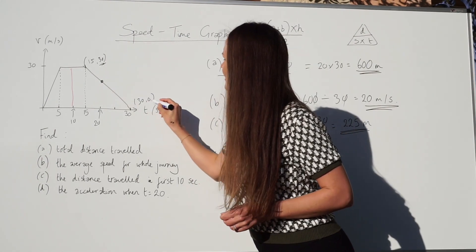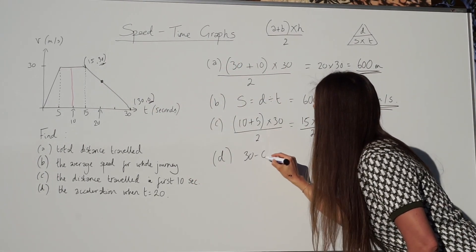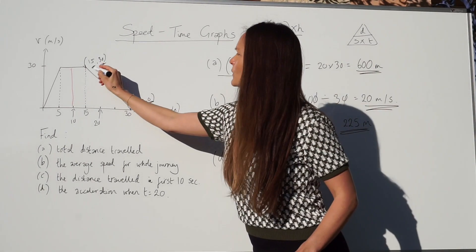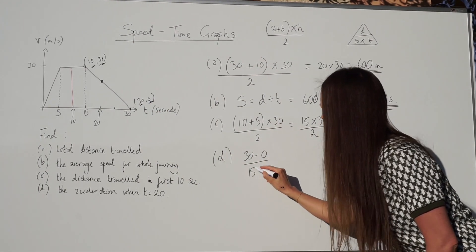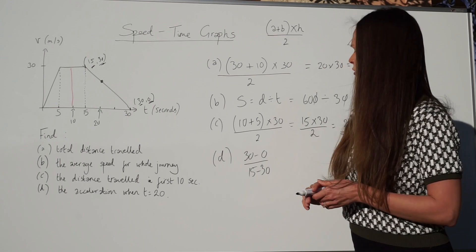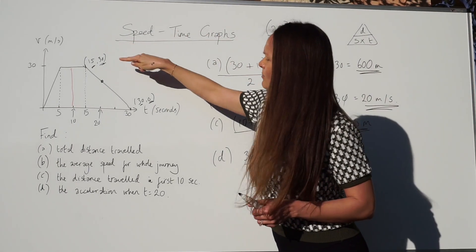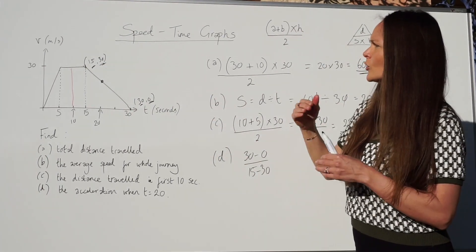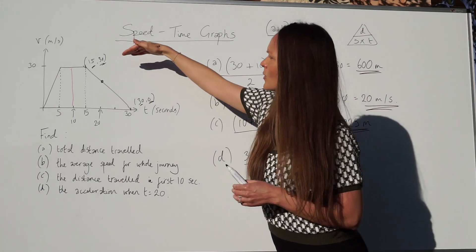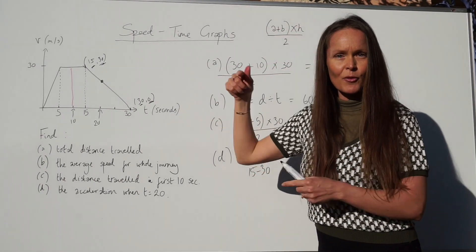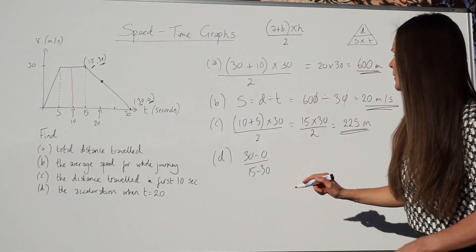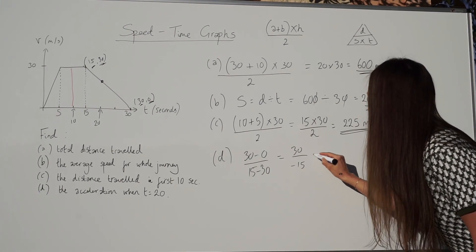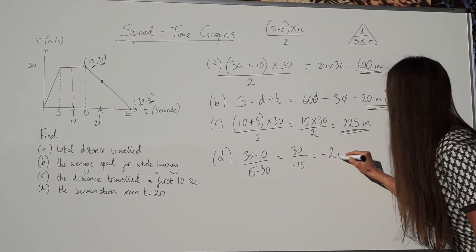Just be careful when you do these subtractions. Notice how I did the top point minus the bottom point for both. Make sure you're consistent with your subtractions. You will get the same answer if you do these ones minus the ones up here. But, make sure you do the same for both pairs of values. So, if we work that out, 30 take away 0 is just 30. 15 minus 30 is negative 15. And, that simplifies to negative 2.